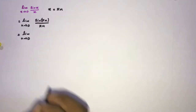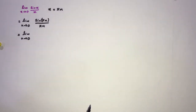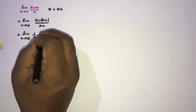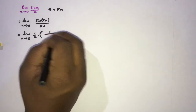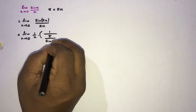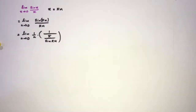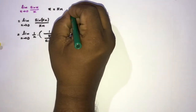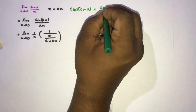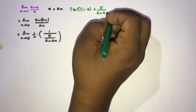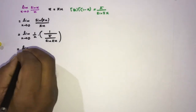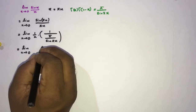This is Euler's reflection formula. We can write 1/n times π/sin(π·n). We know Euler's reflection formula: Γ(x)·Γ(1−x) = π/sin(π·x). So now we can write the limit as n approaches 0 of 1/n times π/sin(π·n) using gamma functions.